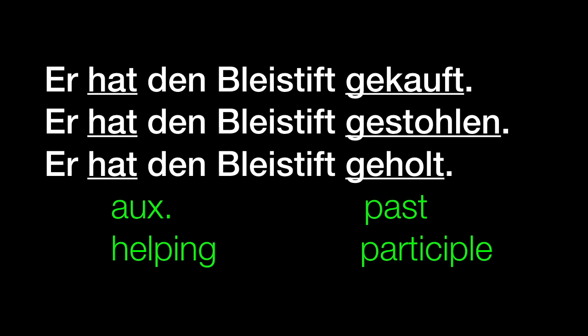Here's a whole set of past participles: gekauft, gestohlen, geholt. The past participle in German usually begins with GE, but there are exceptions. Notice that these end either with a T or with an EN. Here's the hint: if it is a regular verb, then it will end with a T. Regular verbs have a past participle that ends with the letter T. Irregular verbs have a past participle that ends with EN. So if a verb is not regular, the past participle will probably end with EN.